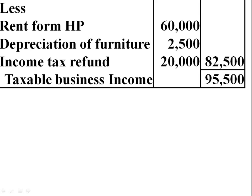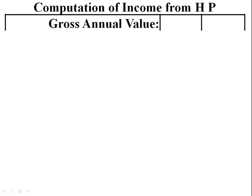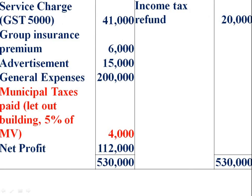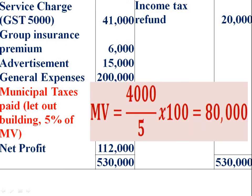Rs. 95,500 is the taxable business income. Then we compute income from house property. First, gross annual value — compute the expected rental value. Municipal tax paid is Rs. 4,000, being 5% of municipal value. Therefore we can compute the municipal value on the basis of municipal tax paid.